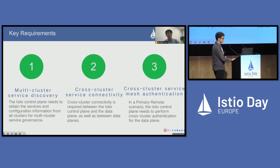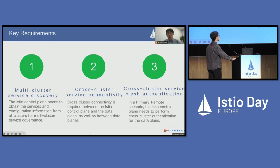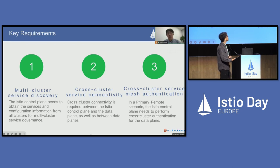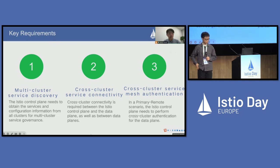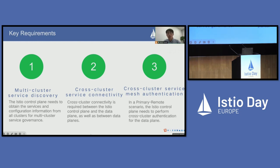We think that Istio needs to span multiple clusters with three key requirements. The first is a need for service discovery across multiple clusters — the Istio control plane needs to obtain service and configuration information from all clusters. The second is a need for cross-cluster service connectivity, required between the Istio control plane and data plane, as well as between data planes. The third is a need for cross-cluster service mesh authentication.